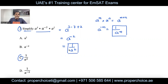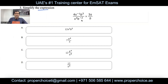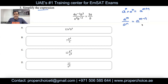Question 3: Simplify the given expression. The rules to apply are: when bases are the same and multiplied, add the powers (a^m × a^n = a^(m+n)); when divided, subtract the powers (a^m ÷ a^n = a^(m−n)). In the numerator, 4 × 3 = 12, and a⁻¹ × a¹ = a⁰ = 1, leaving 12b³.